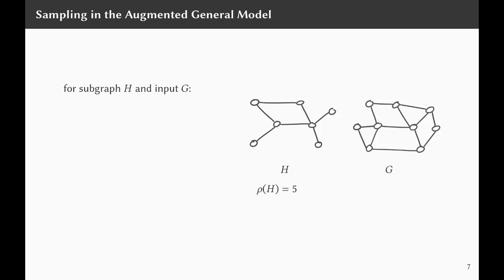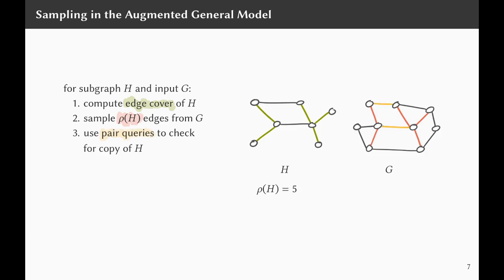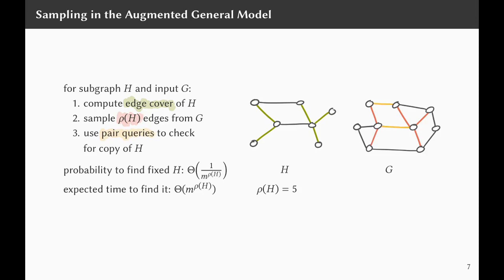Let's turn our simple algorithm from the beginning into a better algorithm. For subgraph H and input graph G, we first compute an edge cover of H. We sample ρ(H) edges from G, hoping to sample the edges from our cover. Since it's a cover, we then have sampled all vertices of the subgraph, and what remains are some edges between the vertices — we check for their existence by pair queries. The probability to find a fixed copy is now 1 over M^(ρ(H)), giving expected time M^(ρ(H)) to find a fixed copy of H.